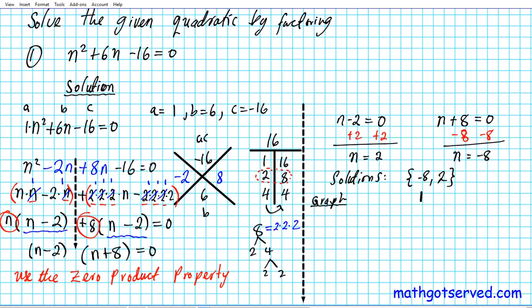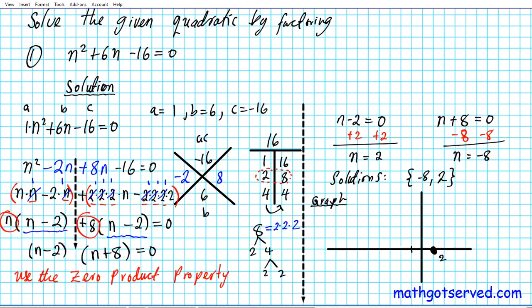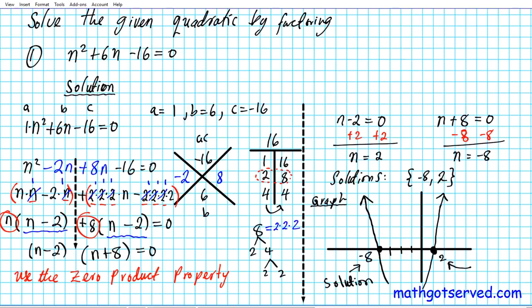Based on what we saw from the calculator, let's sketch the graph. The parabola crosses the x-axis at negative 8 and at positive 2. The graph goes down from the left, reaches a minimum, and then rises back up, crossing at those two x-intercepts. This confirms our solutions: n equals negative 8 and n equals positive 2. That's how you solve quadratic equations by factoring. Let's go ahead and box our answer.